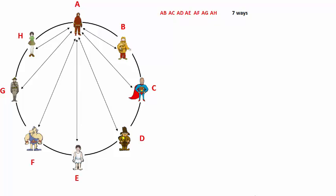Now let's choose person B as reference. Person B can shake hands with person C, D, E, F, G and H. And that can be done in six different ways.